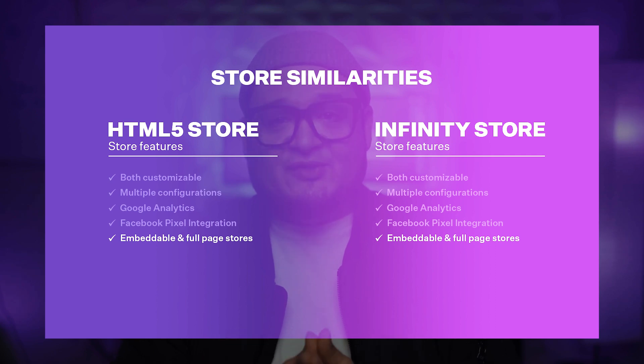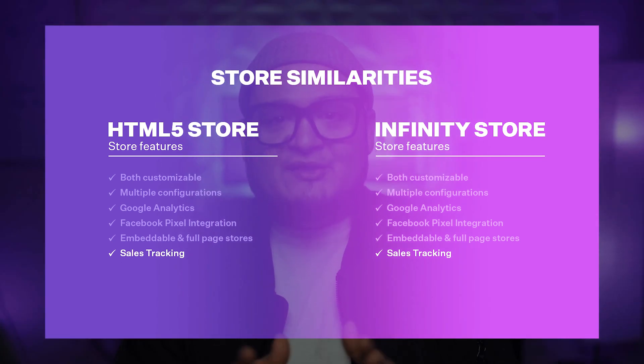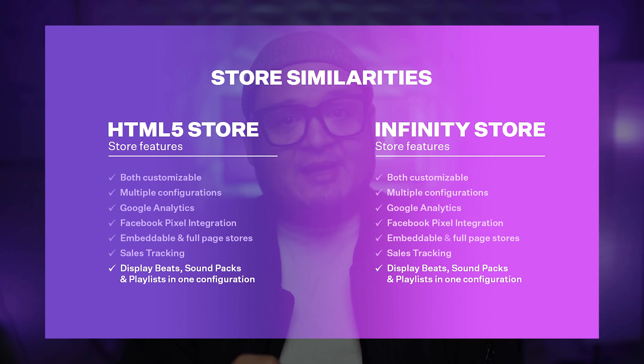Both stores are embeddable and can be used as full page stores. Once you have customized your configuration, you can generate, copy, and paste an embed code to your website so that your store appears wherever you decide to place it within your personal site. This gives your customers an easy way to search your catalog and check out. Next, both stores offer sales tracking. And both stores allow you to display your beats, sound kits, and playlists in one configuration. You can create different tabs in each configuration and they will act as active buttons that switch back and forth from page to page, making it easy for customers to navigate your store.